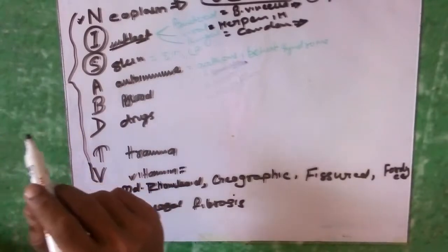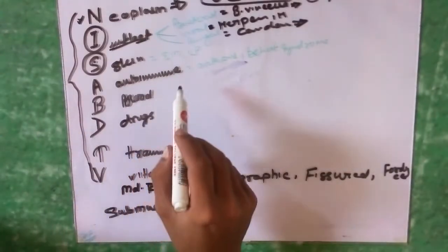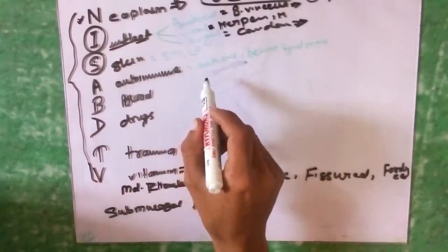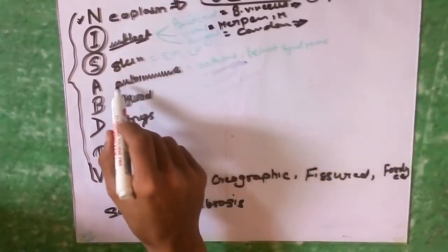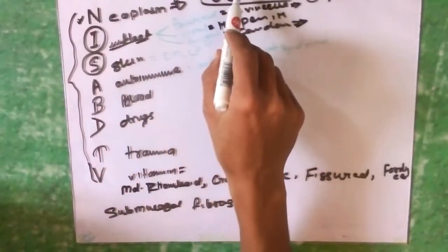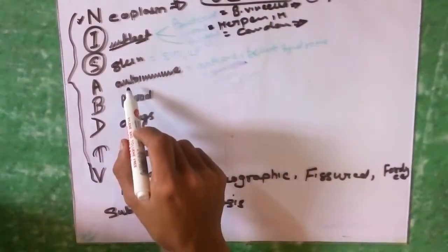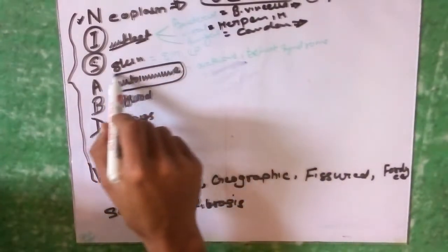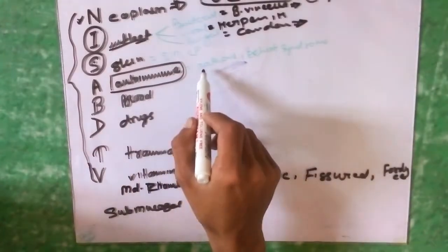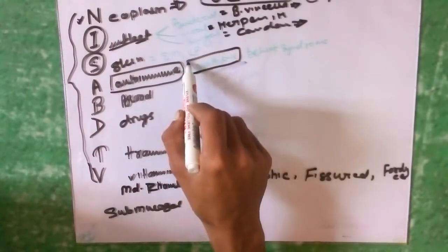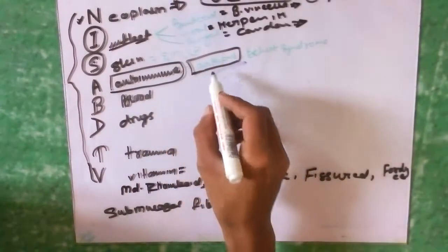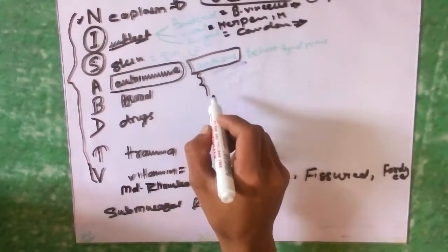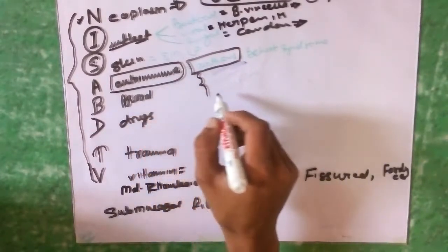The most important cause of buccal mucosa ulcer is autoimmune disease or immune-mediated ulcerative disease, known as aphthous ulcer. Regarding aphthous ulcer, its exact cause is not known but it is regarded as an autoimmune disease.